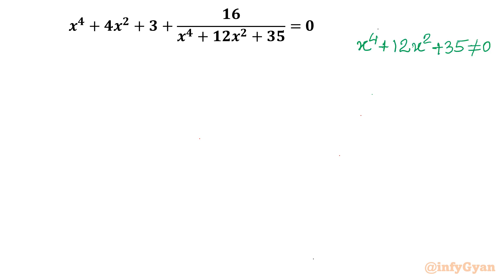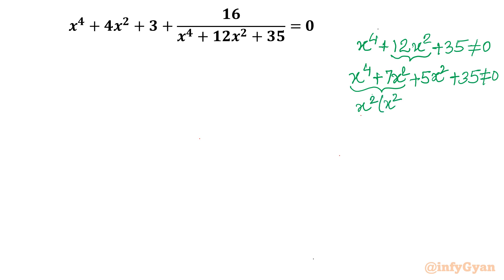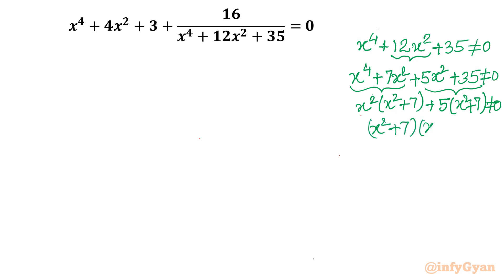Let's find the values of x that make the denominator zero, since those won't be accepted. I'll split 12x² as 7 + 5, writing x⁴ + 7x² + 5x² + 35. Taking x² common from the first two terms gives x²(x² + 7), and taking 5 common from the last two gives 5(x² + 7).